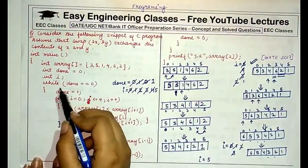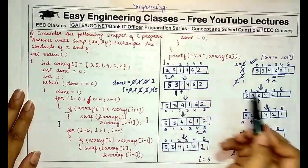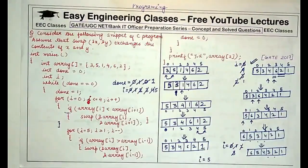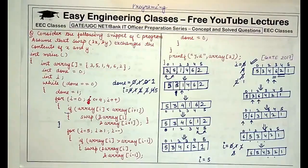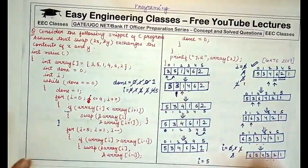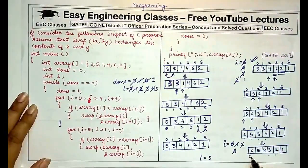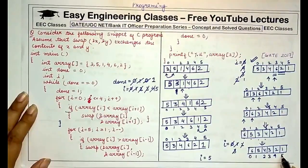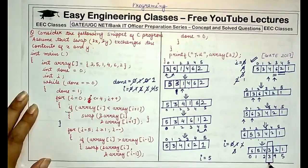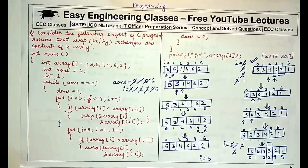Since done is 1, the while loop won't execute again. We need to print array[3]. Looking at the final sorted array 6, 5, 4, 3, 2, 1 with indices 0 through 5, the value at index 3 is 3. That is the final answer. Be careful when executing all iterations not to mix up indices with values.